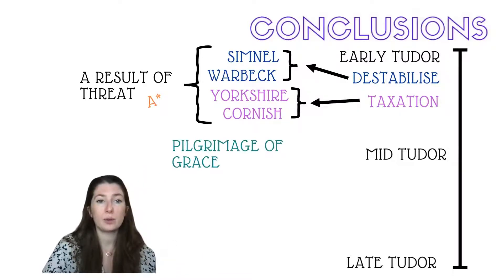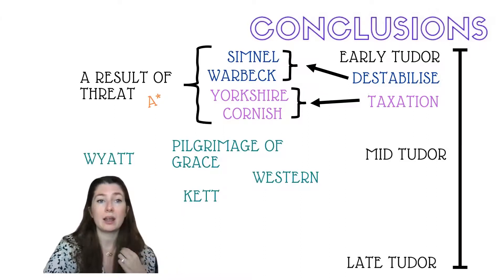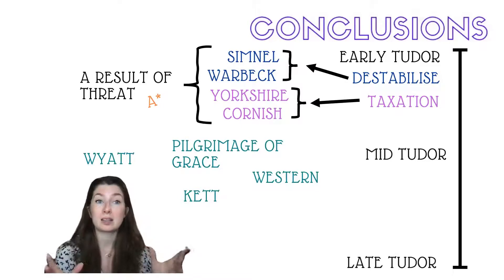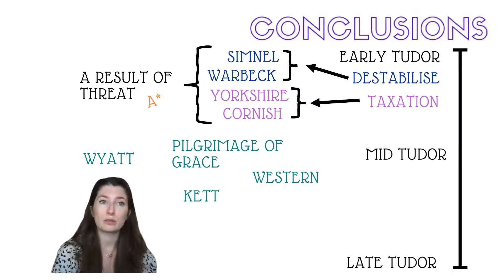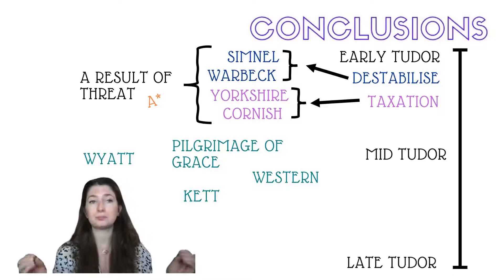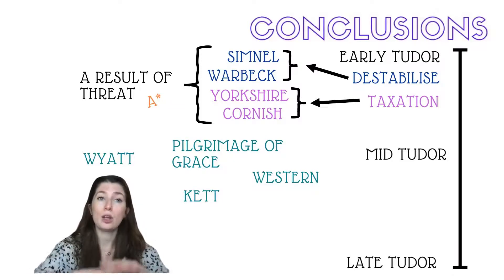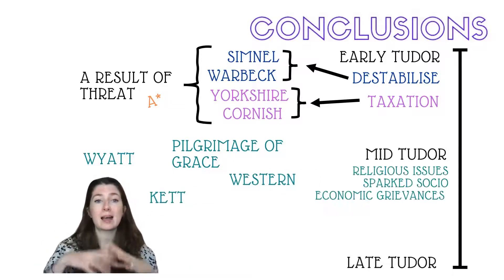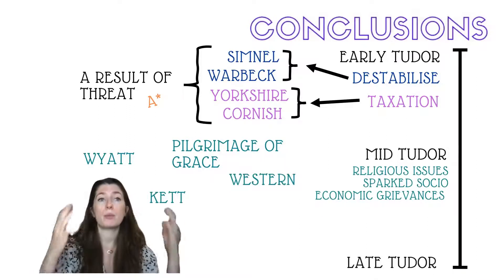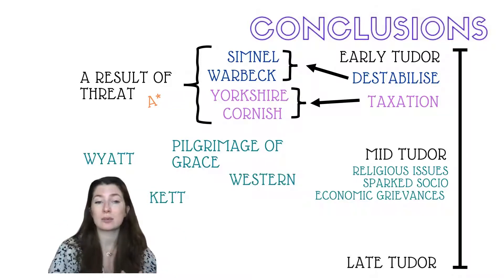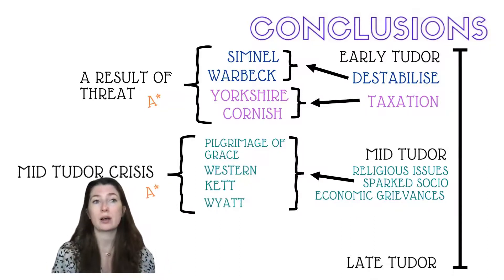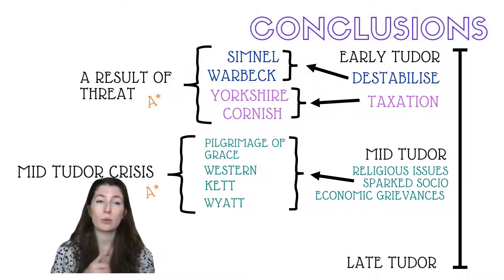Moving into the mid-Tudor period, we have the Pilgrimage of Grace, the Western Rebellion, the Ket Rebellion, and the Wyatt Rebellion. These are more problematic because they have a multitude of causes — you could write for hours about the Pilgrimage of Grace alone. For simplicity of conclusion, I'd suggest we can draw similarity through all four as rebellions with religious issues but with underlying socio-economic problems, particularly within the period we might term the mid-Tudor crisis.